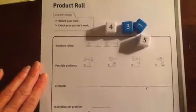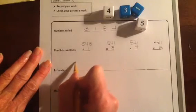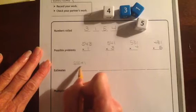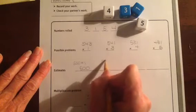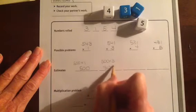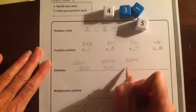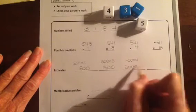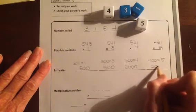They're trying to make the biggest possible number. Then they do estimates. This estimate would be about 500 times 1, so 500. This is about 500 times 3, so 1,500. That's about 500 times 4, so 2,000. And 400 times 5.